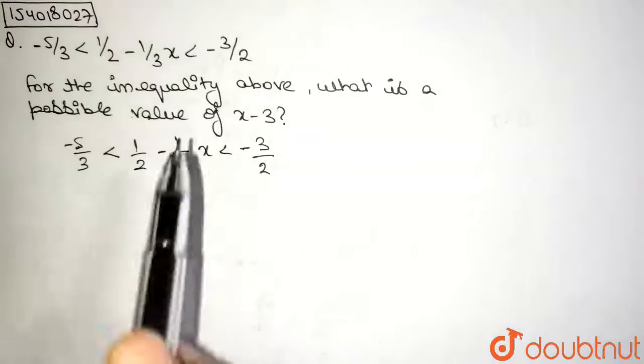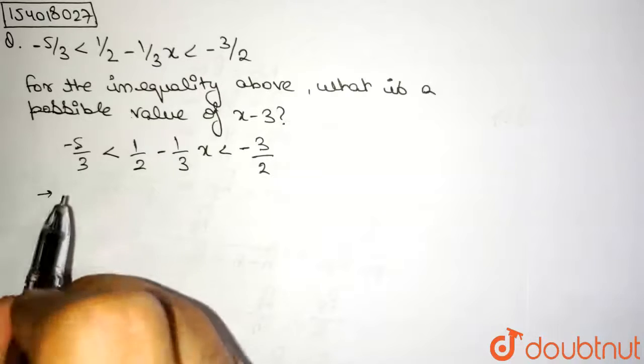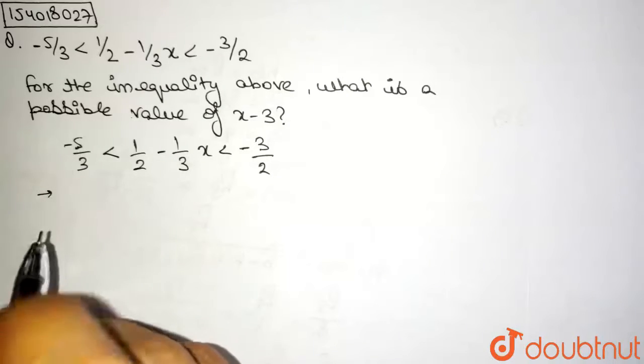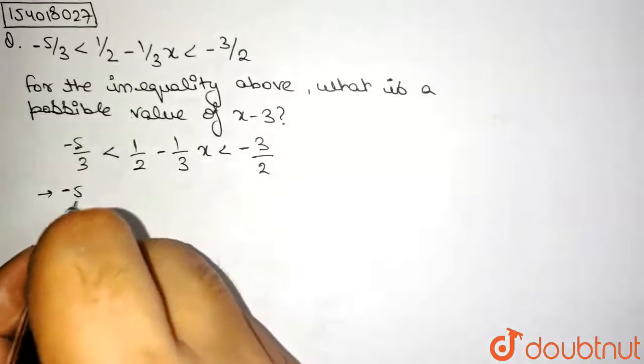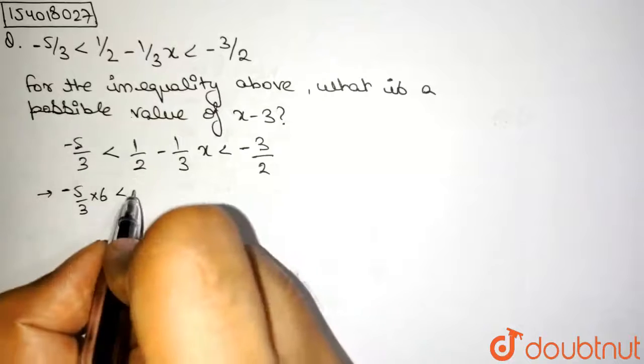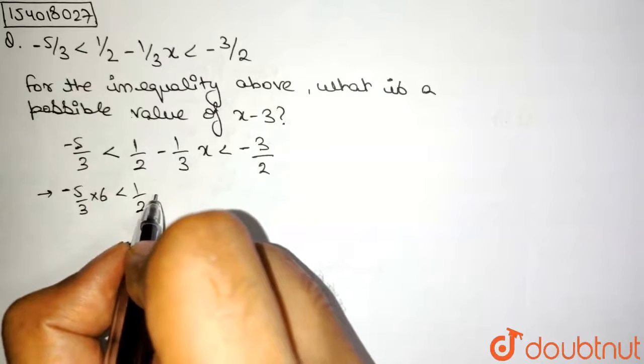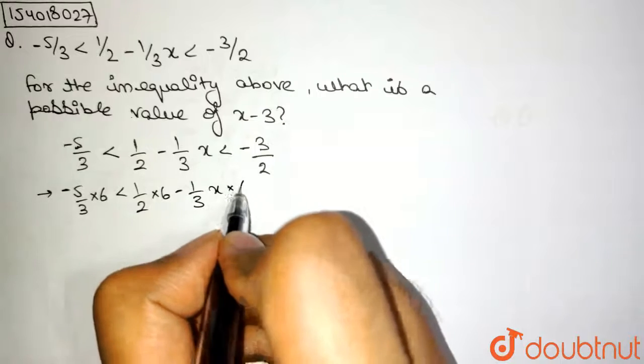Let us multiply first by 6. The first thing should be to simplify the question as much as you can and then proceed with the question. So I am multiplying this by 6 the first term. What I get is minus 5 by 3 into 6 is less than half into 6 minus 1 by 3 times x into 6.